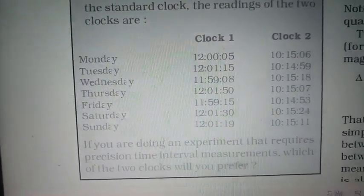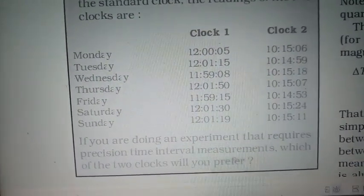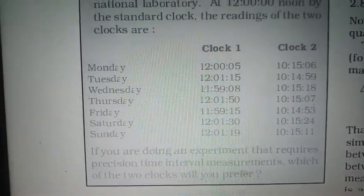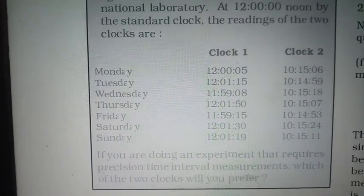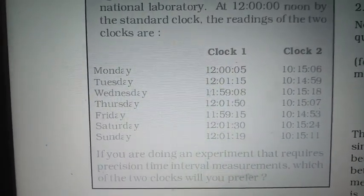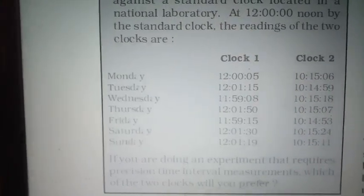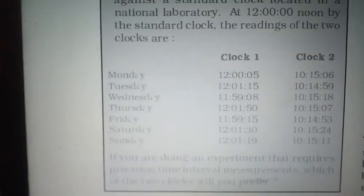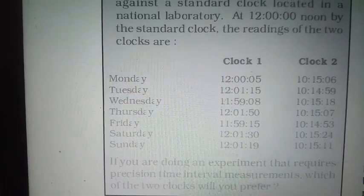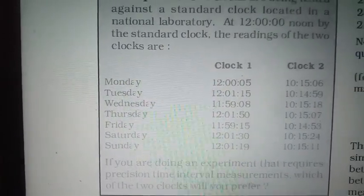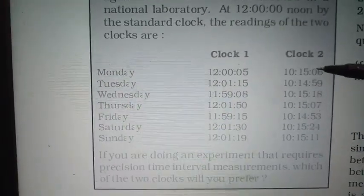We will adjust the reading to get the actual reading. If there is no weight on the weighing machine and it is showing 5 kg, this means that when it shows 7 kg, the actual weight is 7 minus 5, which is 2 kg.